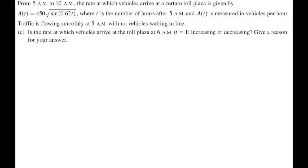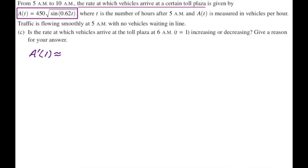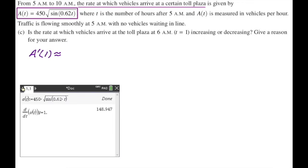Next: is the rate at which vehicles arrive at the toll plaza at T equals 1 increasing or decreasing? The rate is A of T, so we're looking for whether the rate is increasing or decreasing. I'm going to find A prime and evaluate it at 1. It's a calculator question, so I need A prime of 1. I've stored the function and found the derivative of that function at 1. I got approximately 148.947, which is greater than 0.